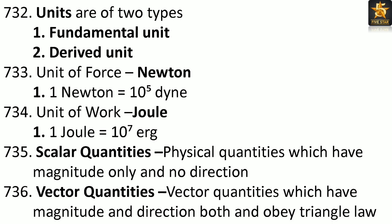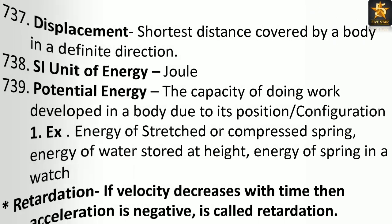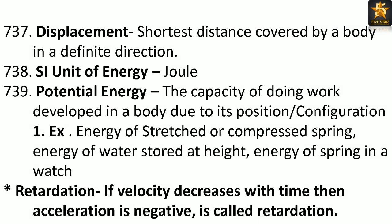Scalar quantities: Physical quantities which have magnitude only and no direction. Vector quantities: Physical quantities which have magnitude and direction both and obey the triangle law. Displacement: Shortest distance covered by a body in a definite direction.